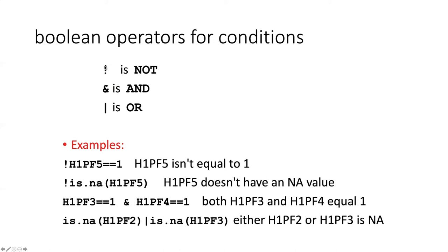We've actually seen this before when we checked whether a vector had values that were not NAs. So here we see that here would be checking if things were not equal to one. Here's if things are not NAs. We can also combine two conditions.